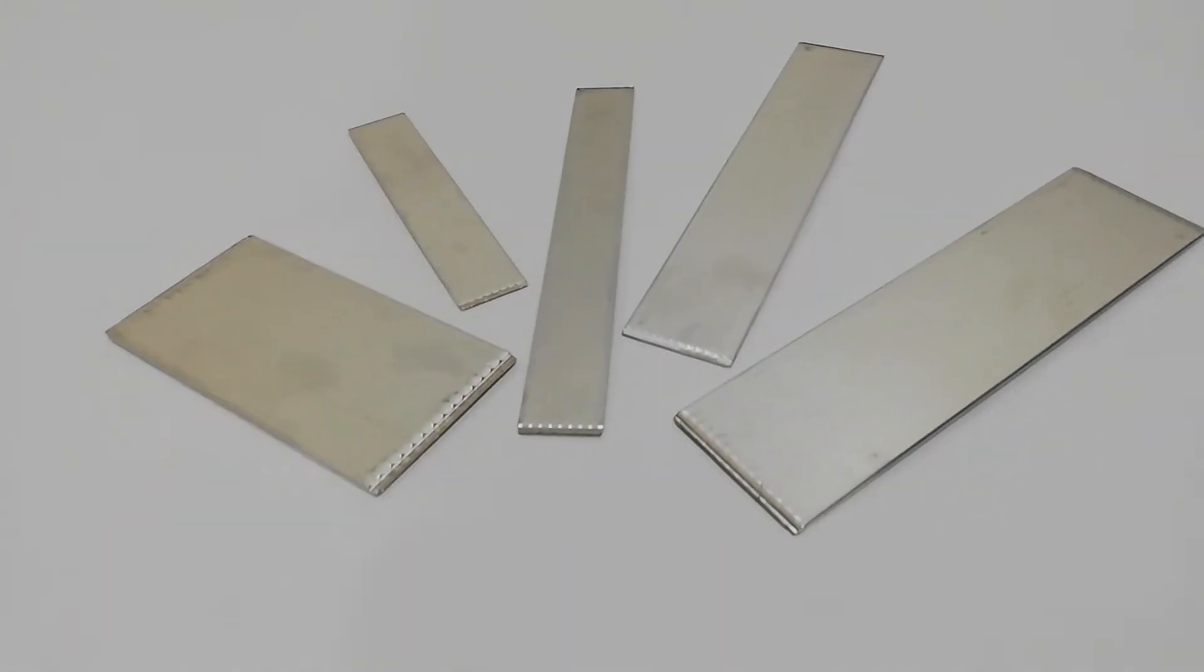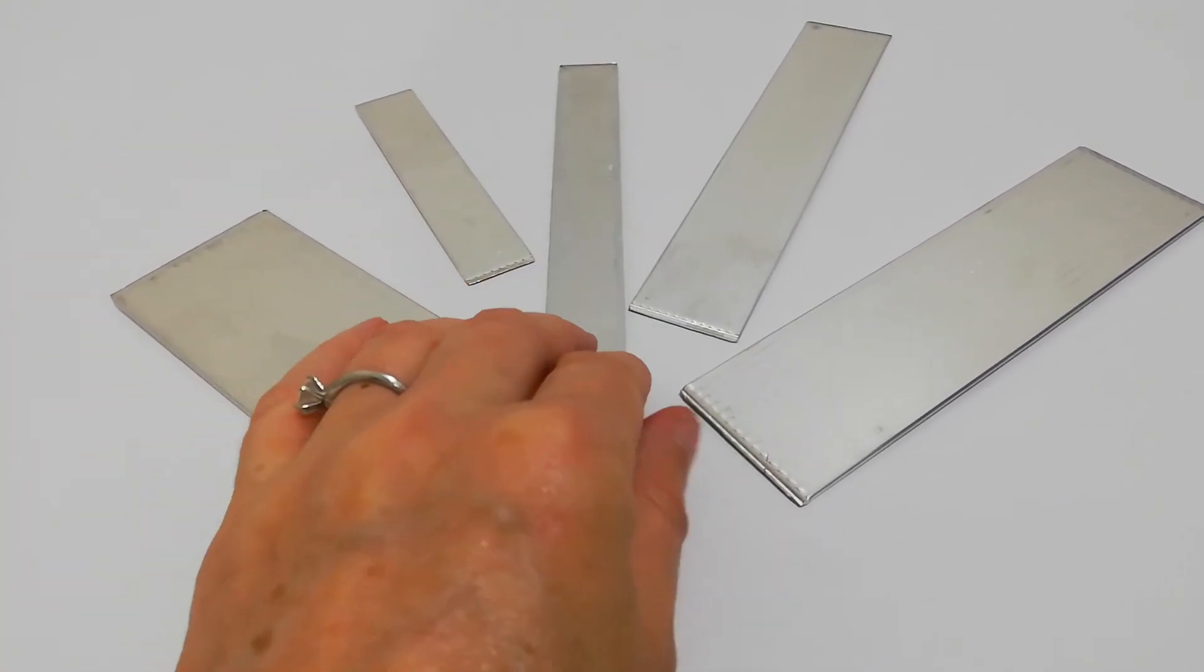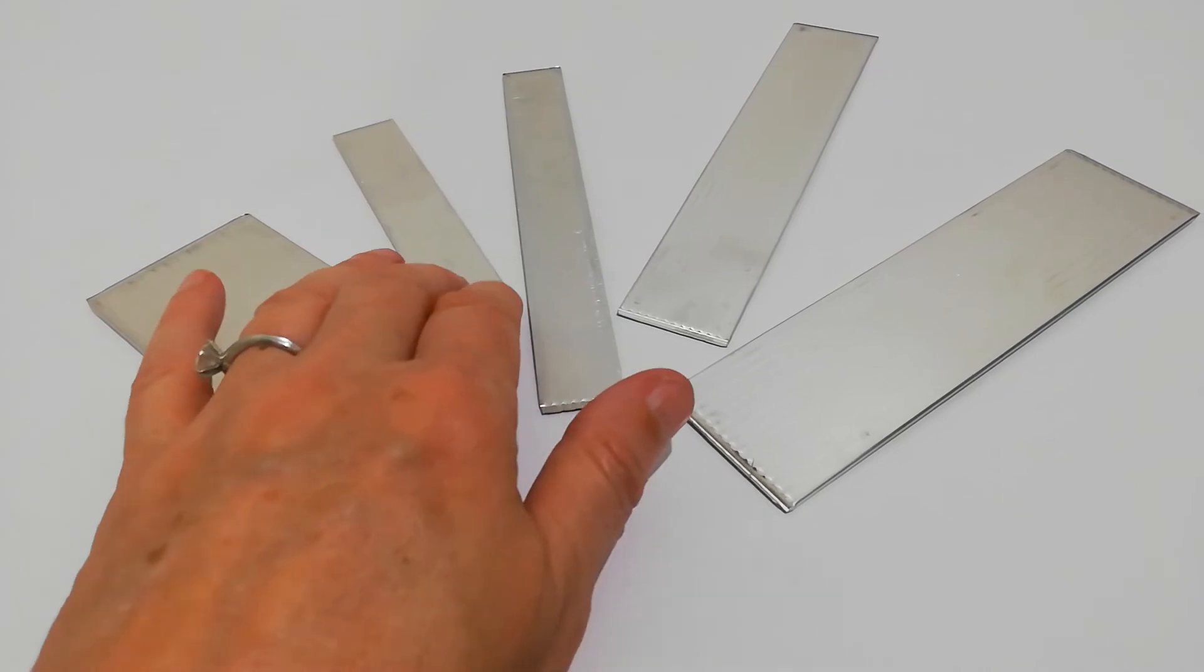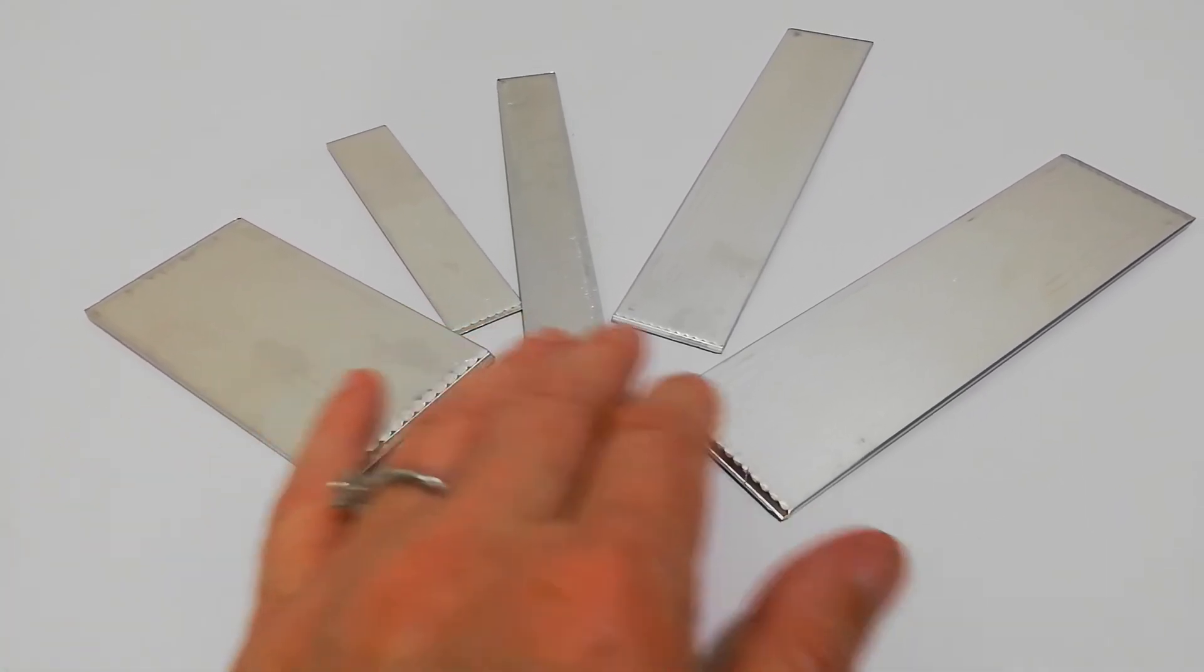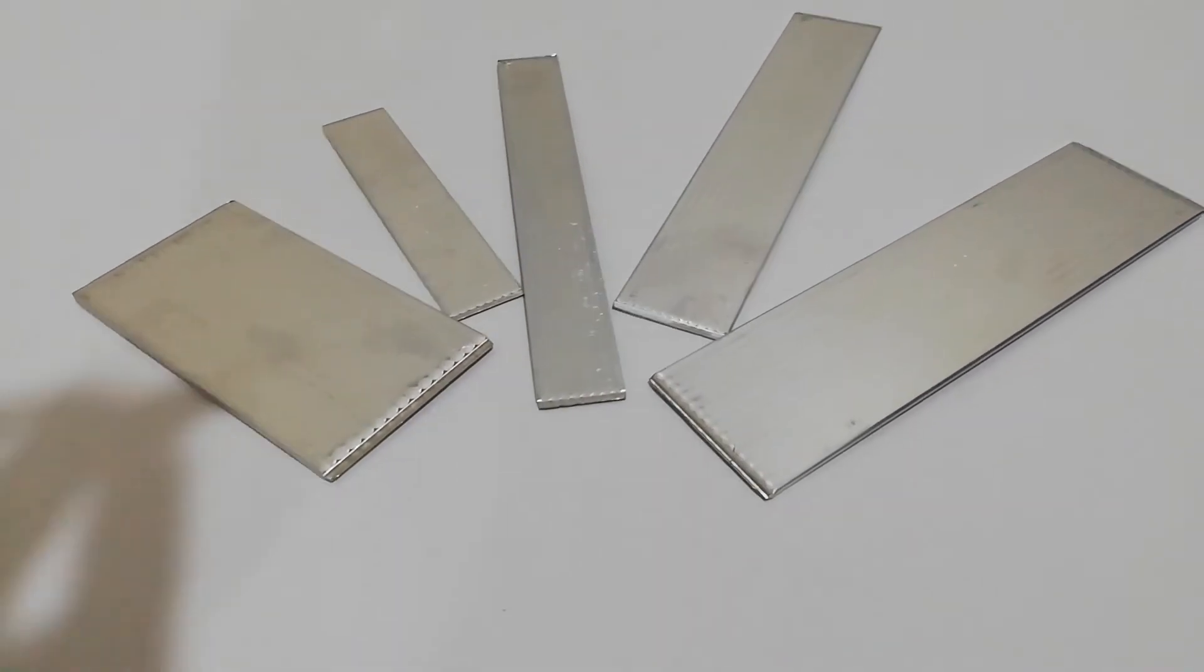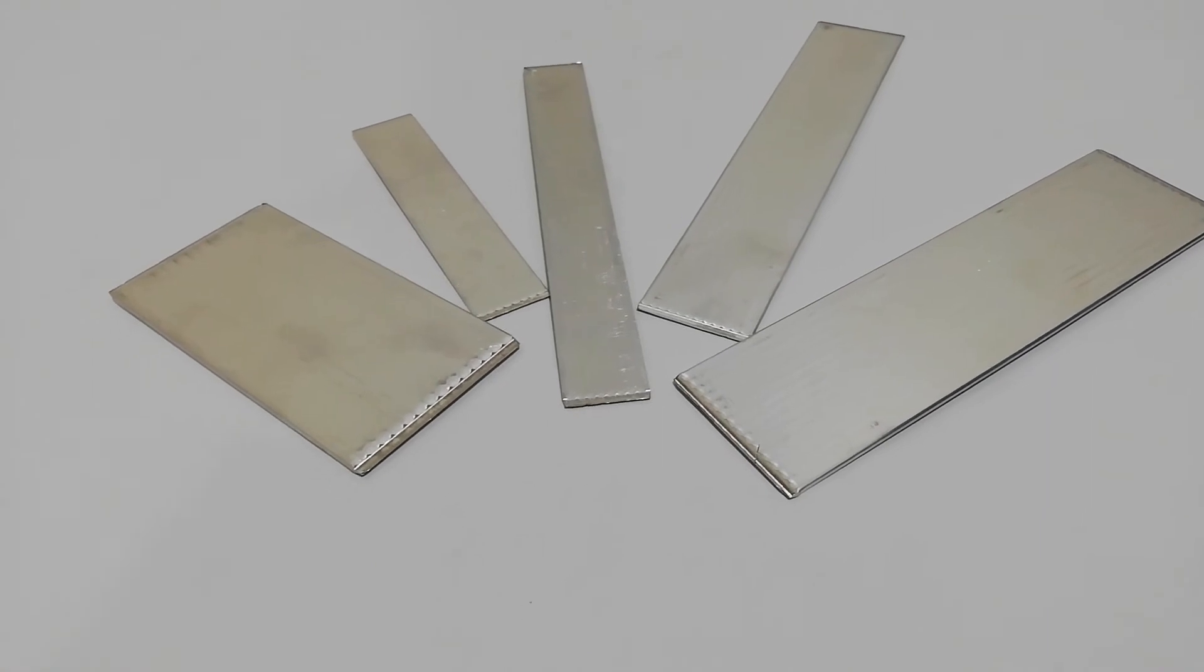They've got a groove and wick structure with acetate as a working fluid and you place one end of the heat pipe on the heat source and then the other end maybe against the chassis or the enclosure. And when the liquid heats up, it transfers all the way along the pipe to the other end.